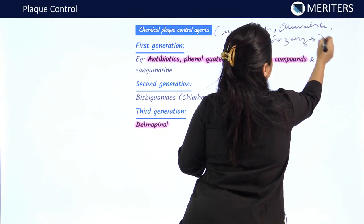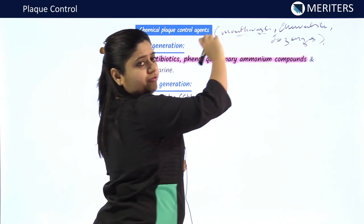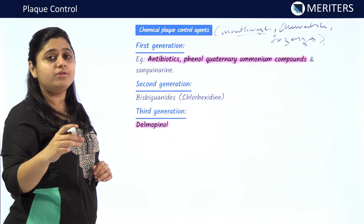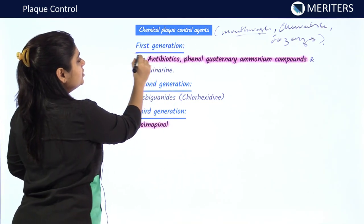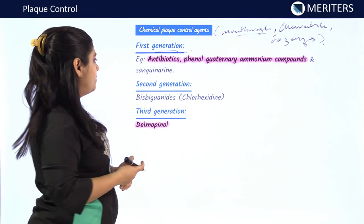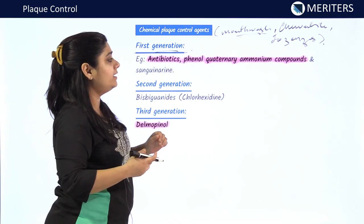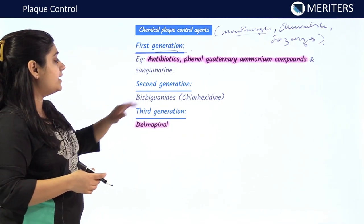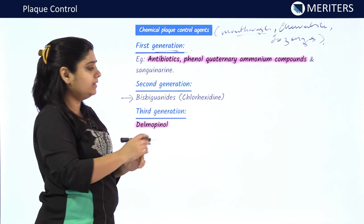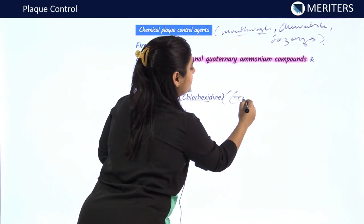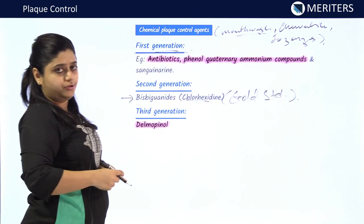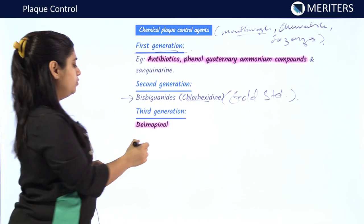Mostly we give chemical plaque control in the form of mouthwash. Chemical plaque controlling agents are divided into three generations. First generation agents include antibiotics, phenol, quaternary ammonium compounds, and sanguinarine. Second generation compounds include bisbiguanides, that is chlorhexidine. Chlorhexidine is the gold standard for chemical plaque control. The third generation includes delmopinol.